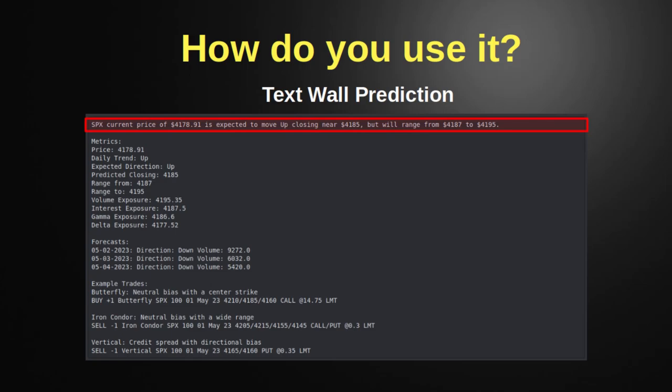The very top of the text wall is the actual prediction itself. For example, in this graphic it says: 'SPX current price of 4178 is expected to move up near 4185, but will range between 4187 and 4195.' This is the core of Magic Eight Ball — you shake it up and ask where the stock market is going, and this is what it spits out. Key factors: current price, expected direction, expected end-of-day closing, and the range. If the price is way outside the range, that's probably a good time to enter the trade, especially for a vertical.